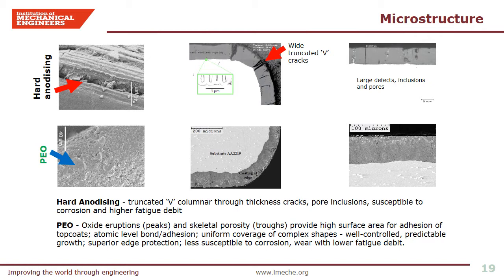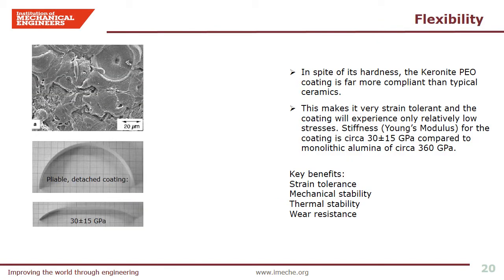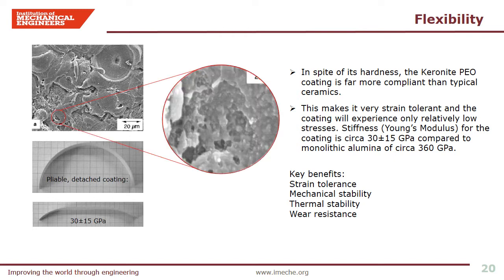On the other hand, the PEO coating usually offers superior edge protection at corners and bends, a high degree of uniformity, and protection against corrosion with minimal loss in fatigue, even for highly complex shapes. The PEO surface has an abundance of oxide eruptions, peaks and skeletal porosity that provide high surface area for adhesion of top coats. The SEM images also show that not only does the coating consist of micro-porosity from process micro-discharges, but within these micro-pores there are numerous nanoscale porosity features. Such abundance of both micro and nanoscale pore architecture gives the coating greater flexibility and high tolerance to mechanical and thermal stresses. Young's modulus measured from such a coating was reported to be almost one order of magnitude less than a similar monolithic ceramic aluminum oxide.